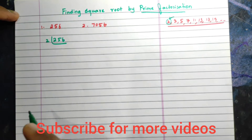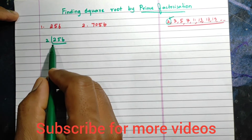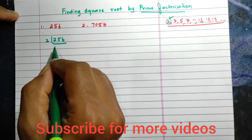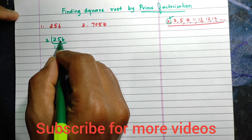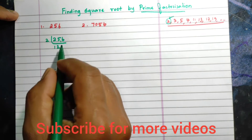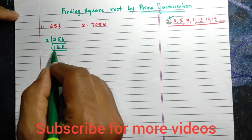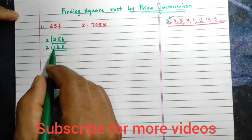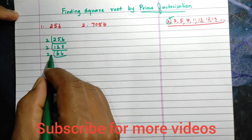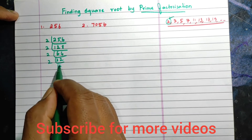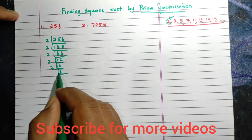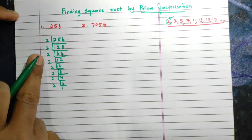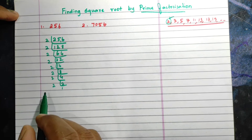We are going to use mental division — a shortcut division. We cannot use long division every time. So we divide 256 by 2 repeatedly: 256 ÷ 2 = 128, 128 ÷ 2 = 64, 64 ÷ 2 = 32, 32 ÷ 2 = 16, 16 ÷ 2 = 8, 8 ÷ 2 = 4, 4 ÷ 2 = 2, 2 ÷ 2 = 1.